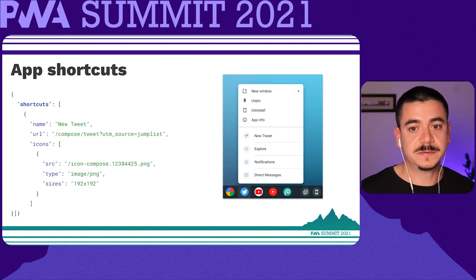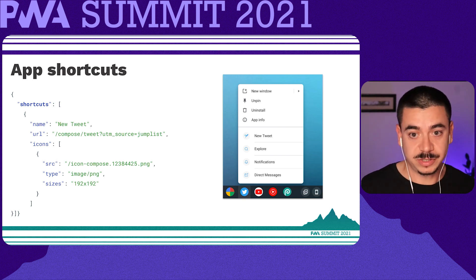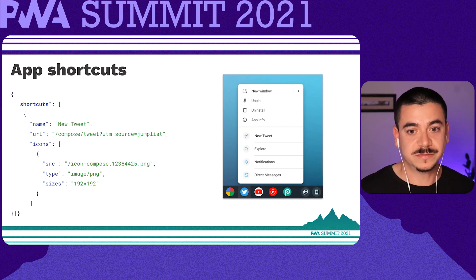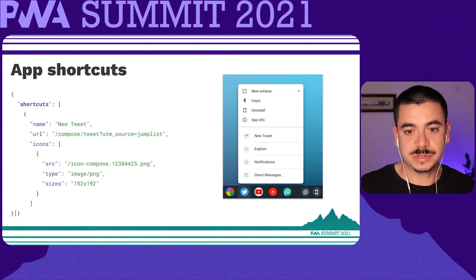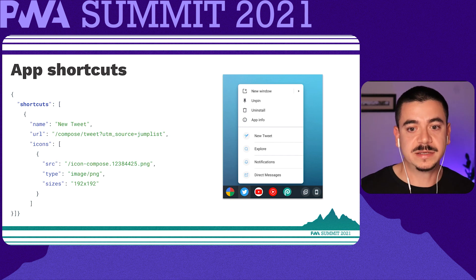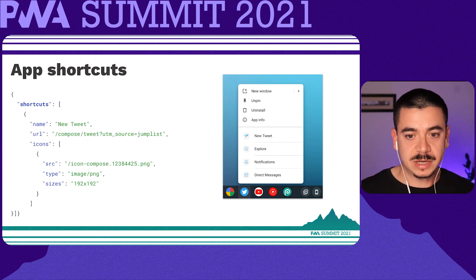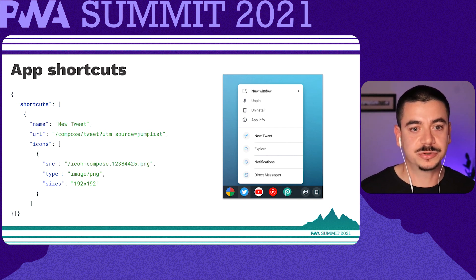App shortcuts are optionally defined in the web app manifest — the JSON file that tells the browser about a progressive web app and how it should behave when installed on the user's desktop or mobile device. More specifically, they are declared in the shortcuts array member. Here you see an example of a potential web application manifest defining shortcuts.